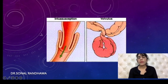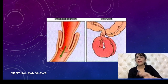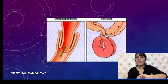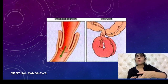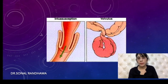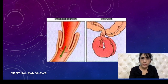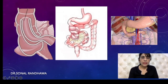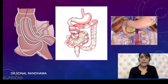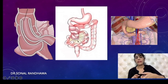In volvulus, there is twisting of the loop — usually clockwise — so the intestinal loop twists along with the mesentery. There may be one twist, two twists, or multiple twists. In intussusception, there is invagination of part of the intestine into the other, with the mesentery going into the groove and vessels getting entrapped. In volvulus, the intestine and mesentery twist together.